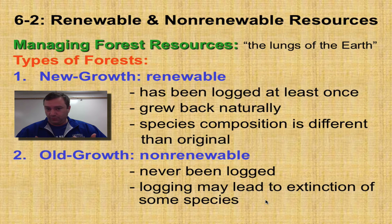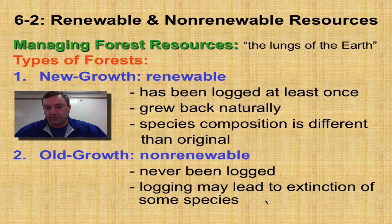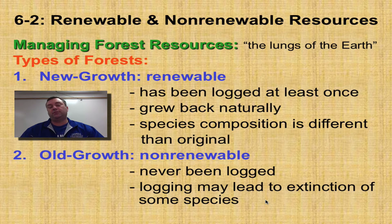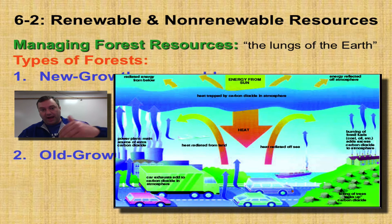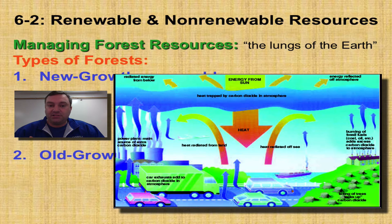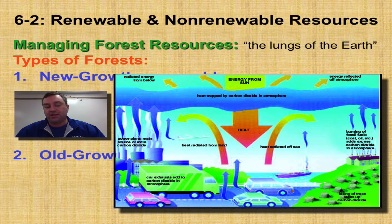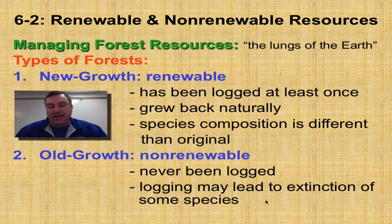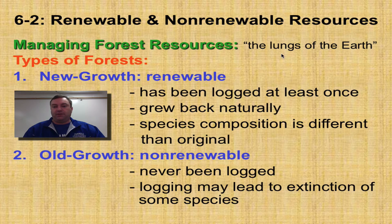Now, managing forest resources. Forests are the lungs of the earth and have a really important job when it comes to the greenhouse effect. If we managed our forests better, we could greatly help with global warming. Plants take CO2 out of the air and use it for photosynthesis, while humans burning fossil fuels have been adding CO2 to the atmosphere, which is like throwing more blankets on the greenhouse effect, keeping global temperatures on the rise. Trees are a great resource for pulling carbon dioxide out of the atmosphere.